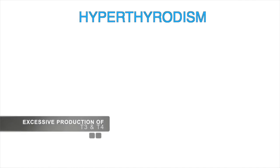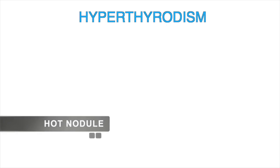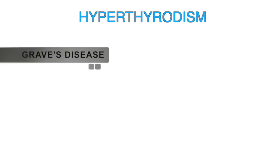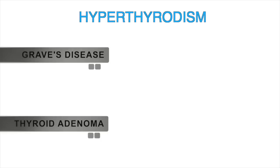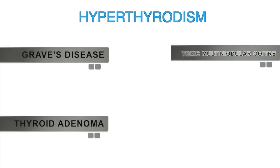Hyperthyroidism is a condition that occurs due to excessive production of thyroid hormone by the thyroid gland. Sometimes the whole gland produces excess hormone, but sometimes a single nodule called a hot nodule is responsible. The main reasons behind excess production include Graves' disease, which is an autoimmune disorder; toxic thyroid adenoma, a benign tumor; and toxic multinodular goiter, also sometimes called Plummer's disease.